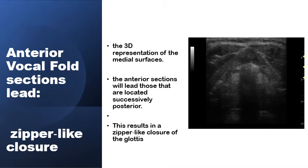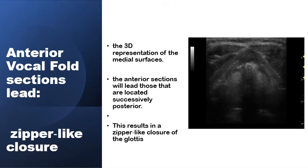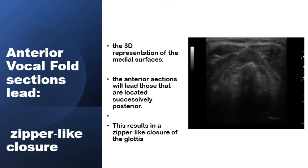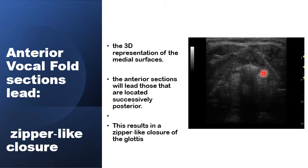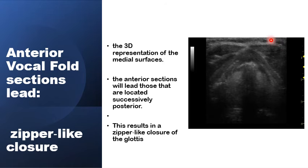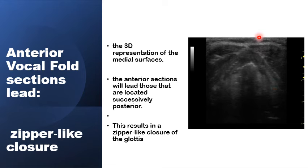A similar phase difference is also noted during the convergence and divergence of the medial ends of the surface of the adducted vocal folds. Much like the phase difference between the superior and inferior parts of the medial surface, the anterior parts of the vocal folds also lead the posterior parts during convergence and divergence, giving rise to what can be seen as a zipper-like closure and opening of the glottic canal.